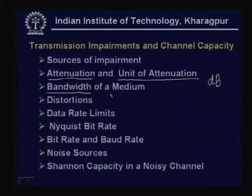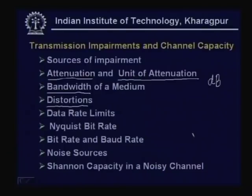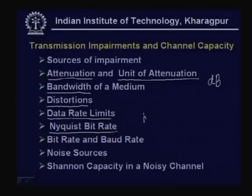Apart from attenuation, impairment also occurs in the form of distortion, which comes in two forms: delay distortion and time distortion. These distortions have to be taken care of at the receiving end. The rate at which data can be sent depends on the medium. There is a data rate limit characterized by the Nyquist bit rate. Depending on the bandwidth of the medium, the Nyquist bit rate is decided — it is the highest data rate that can be transmitted through the medium.